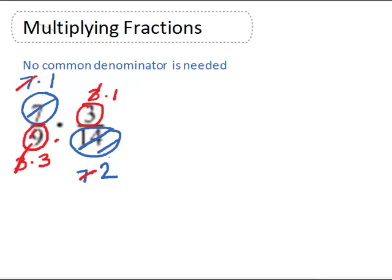Now we're ready to multiply across. We have 1 times 1 on top and 3 times 2 or 6 on the bottom. What's nice about this technique is your answer is already in lowest terms.